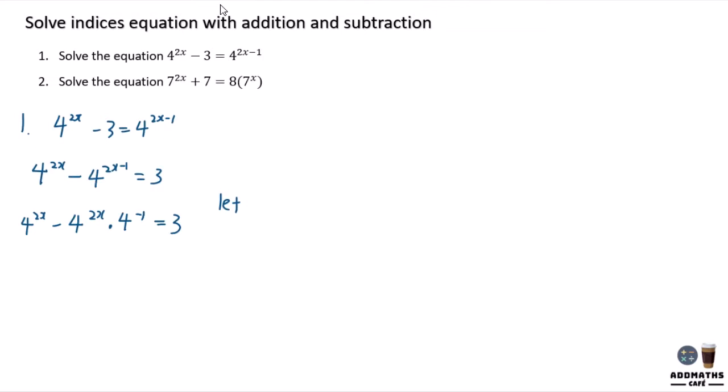Let 4^(2x) = y. So y - y × 4^(-1) = 3. 4^(-1) is actually 1/4, so y - (1/4)y = 3. This gives you (3/4)y = 3.